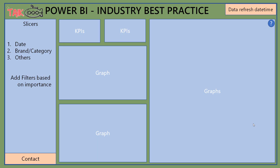When it comes to the industry best practices, there are seven things you need to follow. The first thing is the theme. The theme must contain the company base colors, its font size and font type, as well as font family. So all these things come under the theme.